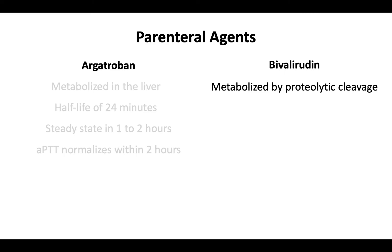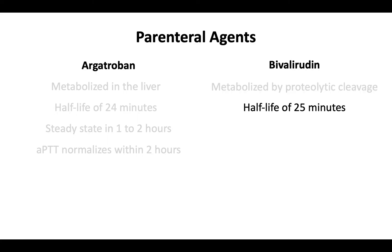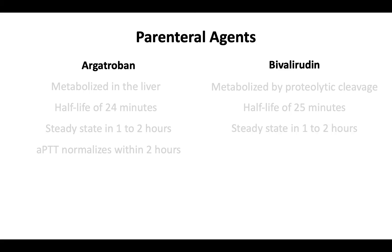Bivalirudin is metabolized by proteolytic cleavage, which is the process of breaking peptide bonds between amino acids. Like argatriban, bivalirudin has a half-life of about 25 minutes. Once initiated, bivalirudin will reach steady state in 1 to 2 hours. When the infusion is stopped, the APTT will normalize in about 1 hour.